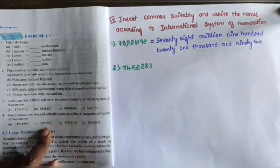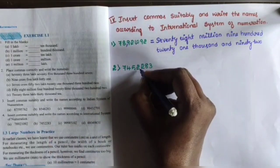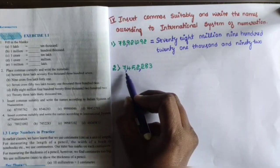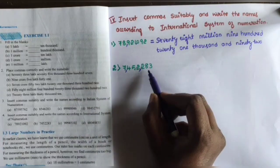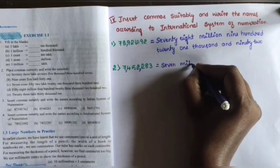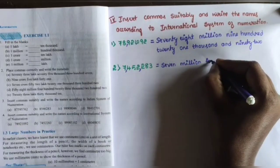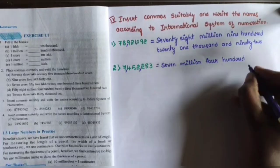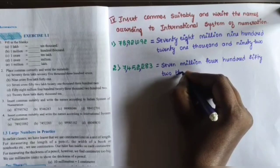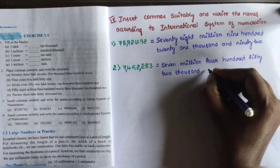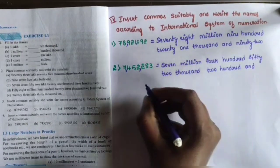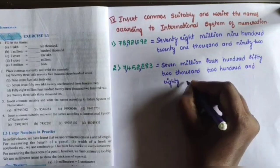Next number: 7,452,283. Insert commas according to the International system of numeration — units, tens, hundreds, thousands, ten thousands, hundred thousands, millions. Written in words: seven million, four hundred fifty-two thousand, two hundred and eighty-three.